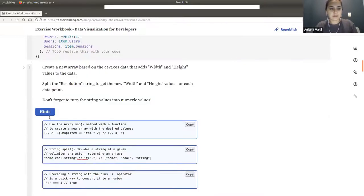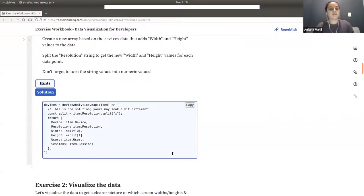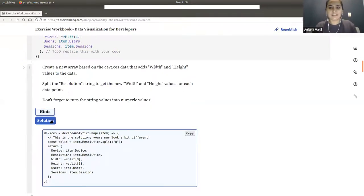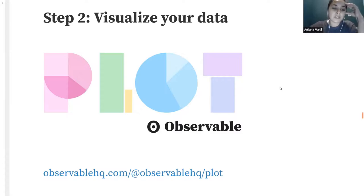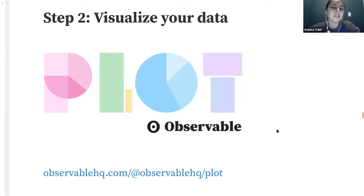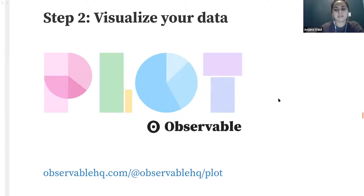Now our devices array has width and height values, and they're numbers. Your solution might look different — you might have used JavaScript destructuring or done it in a different way. There are lots of different ways to solve any problem in computer science. Unless there are questions, let's move right along because we've got lots more to do. We wrangled some data. Now we're going to try to visualize it using a really lightweight library called Observable Plot.